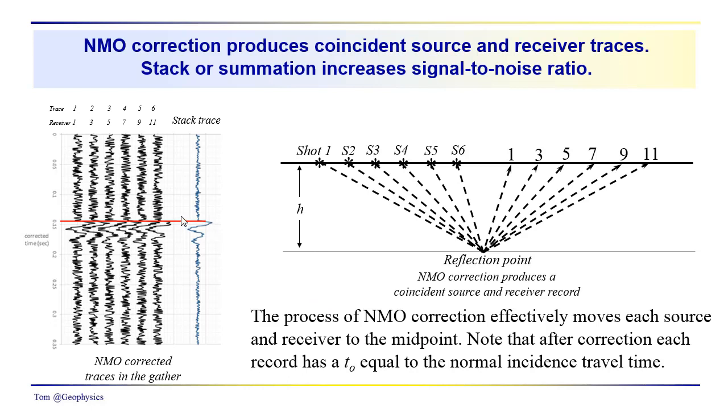So the traces in the common midpoint, we're moving the source and receiver combinations to the midpoint, and the effect after NMO correction is that all the events in the NMO-corrected record come in at the same time, if the velocity has been a good one.